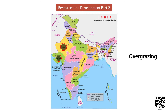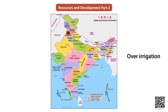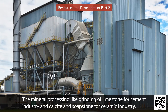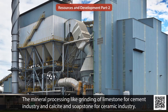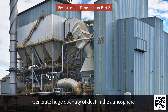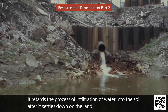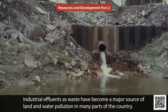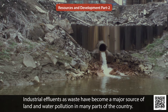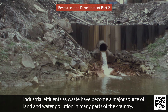In states like Gujarat, Rajasthan, Madhya Pradesh and Maharashtra, overgrazing is one of the main reasons for land degradation. In the states of Punjab, Haryana and Western UP, over-irrigation is responsible for land degradation due to water logging, leading to an increase in alkalinity and salinity of the soil. Mineral processing like grinding of limestone for cement industry and calcite and soapstone for ceramic industry generates huge quantities of dust in the atmosphere. This dust retards infiltration of water into the soil after settling on the land. Industrial effluent and waste have become a major source of land and water pollution in many parts of the country.